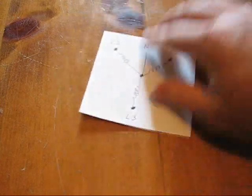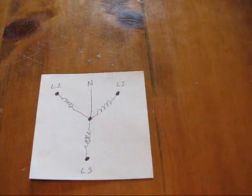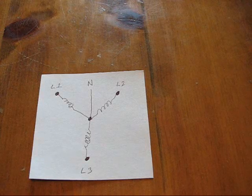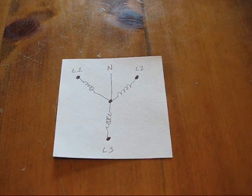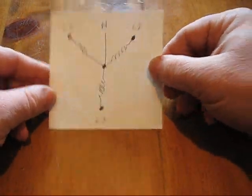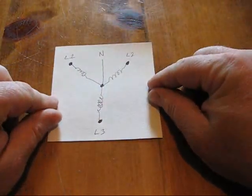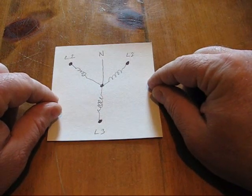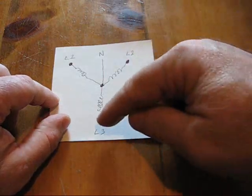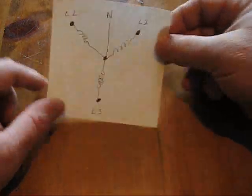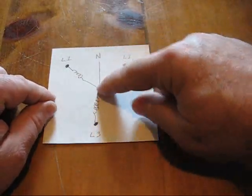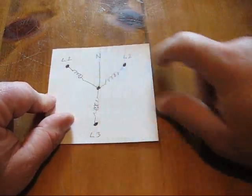This is what it looks like. That's called a Y connection, also called a star connection. That's the three coils of the stator in a generator. You have line one, line two, and line three, which are all the hot legs. And in the center where the three are connected, you have neutral.